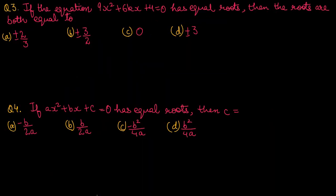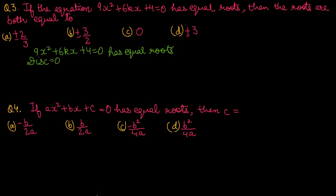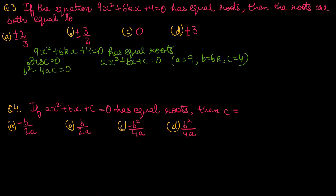Question No. 3: if the equation 9x² + 6kx + 4 = 0 has equal roots, then the roots are both equal to? Equal roots means discriminant = 0. Comparing with ax² + bx + c: a = 9, b = 6k, c = 4. Discriminant: (6k)² - 4(9)(4) = 0, so 36k² - 144 = 0.